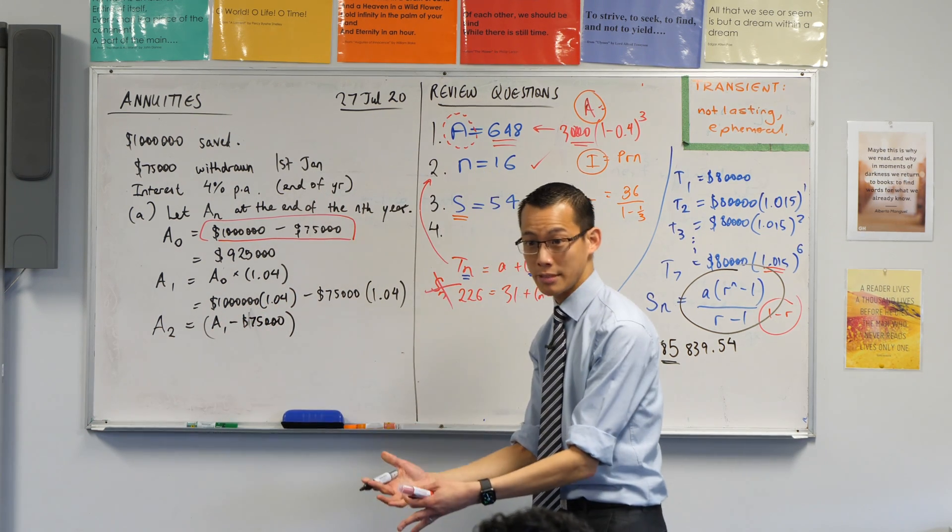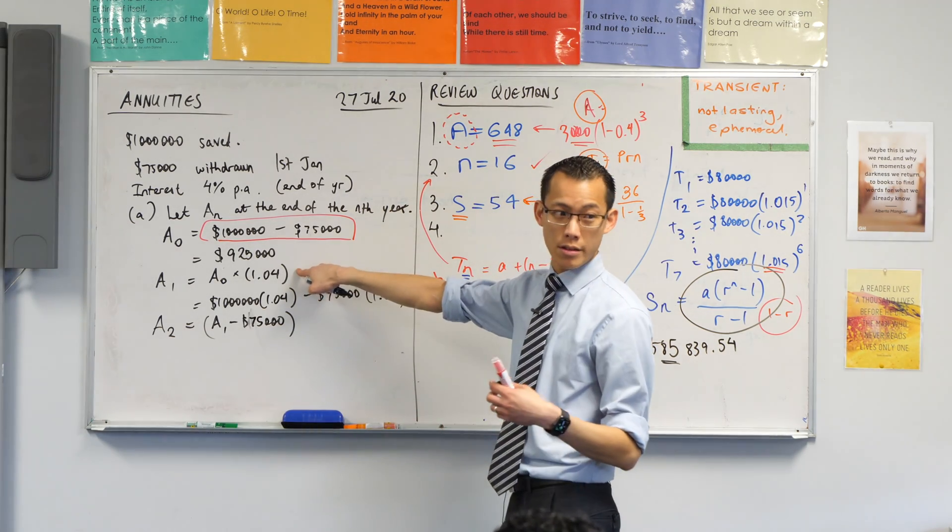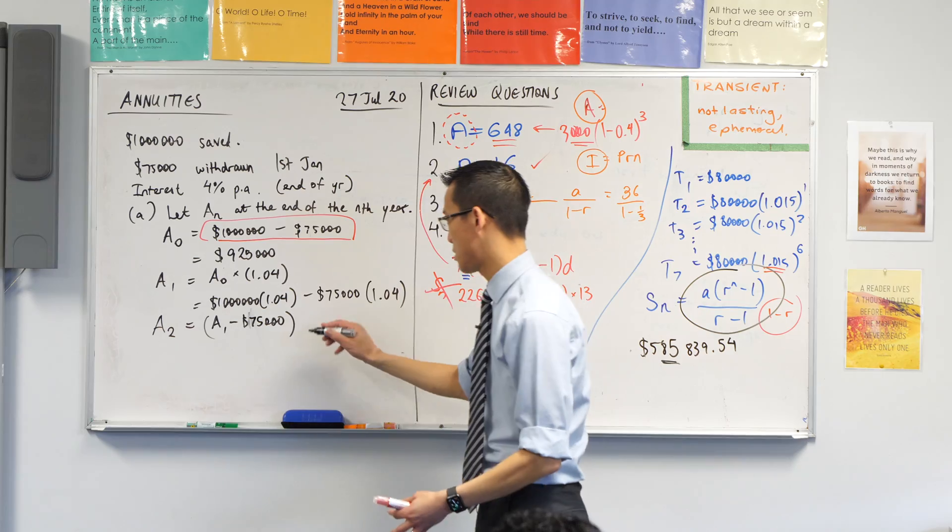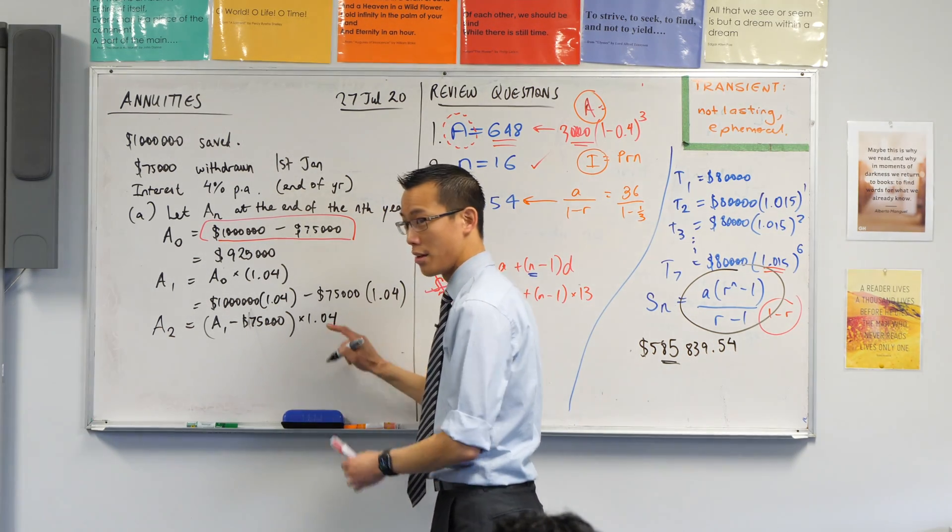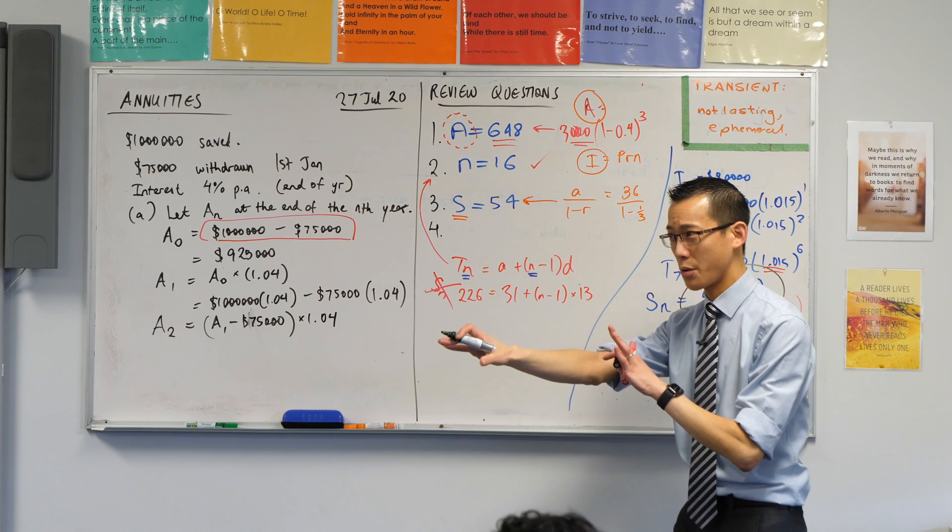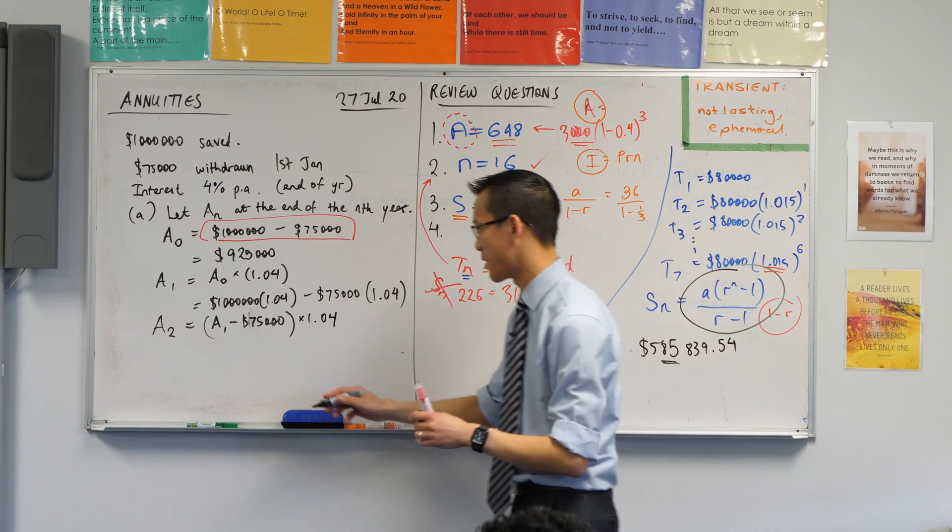So there's the withdrawal that happened at the start of the year, and then the second that happens is the interest calculation, right? So it gets multiplied by 1.04. Let me pause there. Are there questions? Yeah? No? Worth pausing on? Not worth pausing on? Okay, I'll keep going.